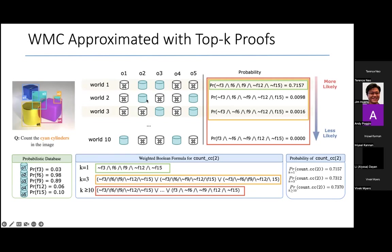In world two, objects O2 and O5 are cyan cylinders, and so on. If we did exact probabilistic reasoning, then that would correspond to the formula at the bottom right, where the k would be at least 10, because 10 is the number of worlds we have.